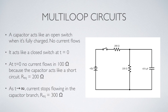Over time, as t approaches infinity, the current stops flowing in the capacitor branch and diverts through the 100-ohm resistor instead. The equivalent resistance increases to 300 ohms, and the steady-state current through the battery, the 200-ohm, and the 100-ohm resistors is 5/300 amps. In the 200-ohm resistor, the current starts at 5/200 and asymptotically decreases to 5/300. In the 100-ohm resistor, the current starts at zero and asymptotically rises toward 5/300.